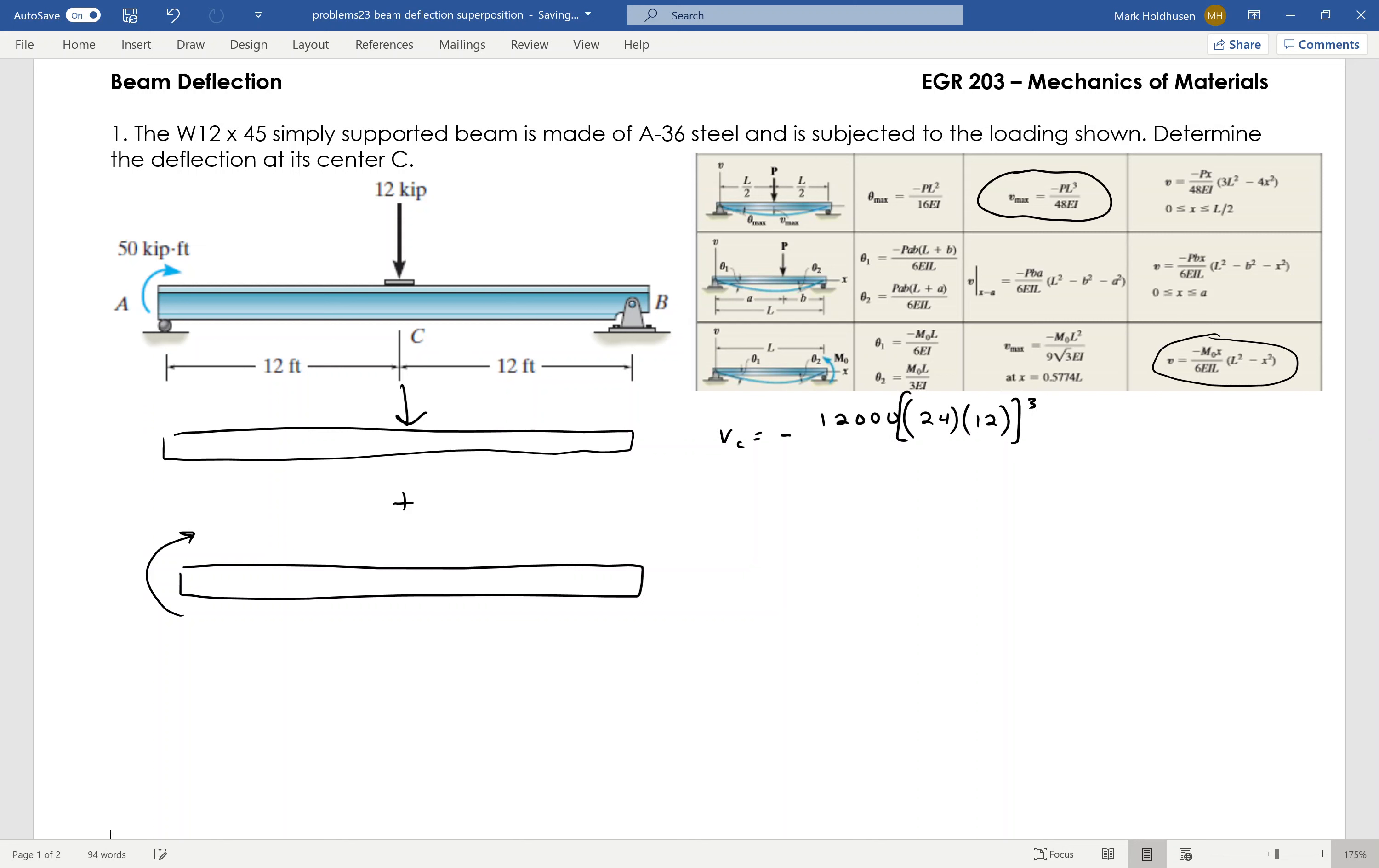So 24 times 12 cubed divided by 48E. This is steel, so E is 29 times 10 to the 6th PSI. You can look that up in the back of the book.